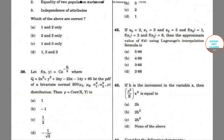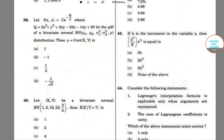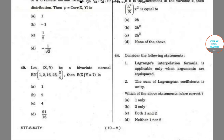Hello students, welcome to Saraxos Classes. In this video, I will be solving selective questions from ISS Statistics Paper 1 of 2017. Let's start with question number 44. In question number 44, we are given some statements. Lagrange's interpolation formula is applicable only when arguments are equispaced. The sum of Lagrangian coefficients is unity. We are asked which of the following is correct.